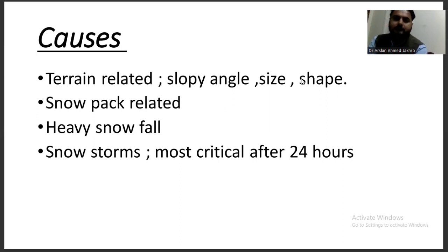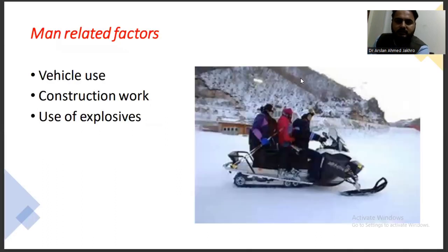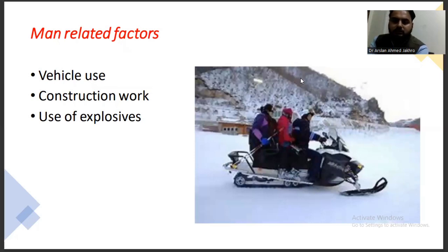From the internet, we know that very big mostly snow storms — almost 24 seconds after that — that happens. That is one of the natural causes related to avalanches.